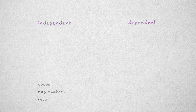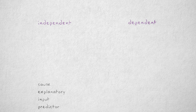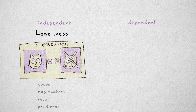The independent variable is also referred to as cause variable, explanatory variable, input variable, or predictor. It refers to a variable that is hypothesized to cause or predict another variable. In our example, loneliness was hypothesized to cause depression. The independent variable here, of course, is loneliness, and it's operationalized through the presence or the absence of a cat.